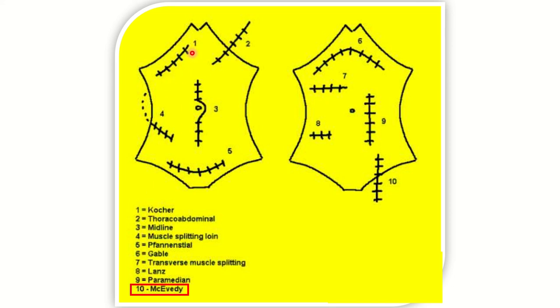Number one is Kocher's incision, number two is the thoracoabdominal, number three is the midline incision, number four is muscle splitting loin incision, number five is Pfannenstiel, number six is Gable, number seven is transverse muscle splitting, number eight is Lanz for appendectomy operation, number nine is paramedian, and number ten is McEvedy.